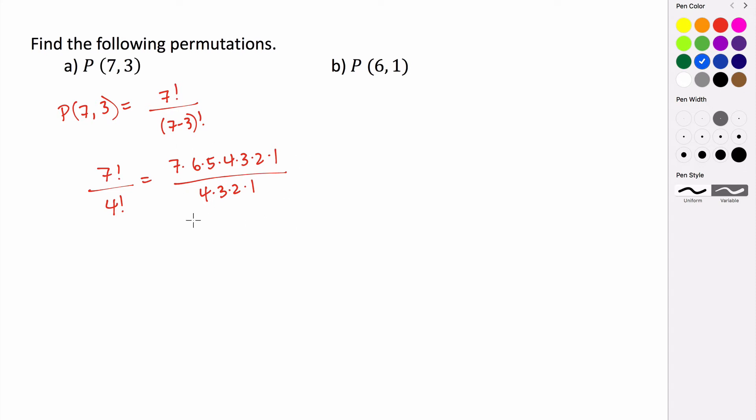Now if you want to simplify this, you can see that we can take all of these numbers, 4 times 3 times 2 times 1, and they will reduce out to be 1. So now all we have left in the numerator is 7 times 6 times 5.